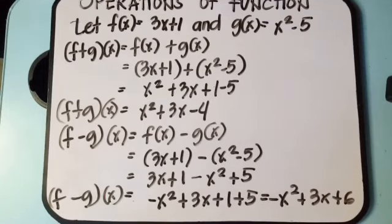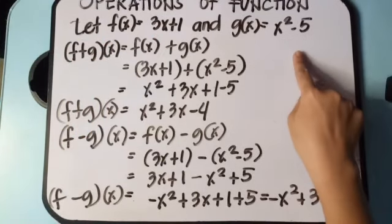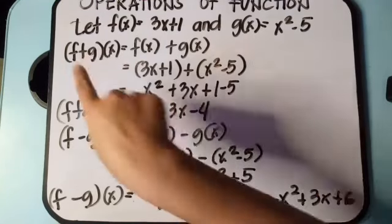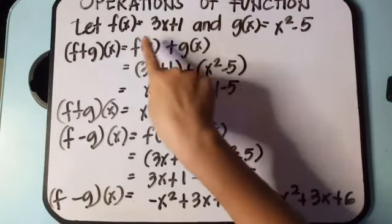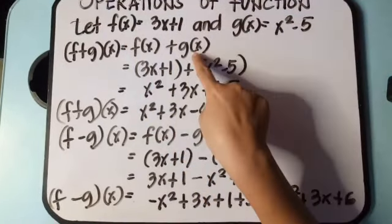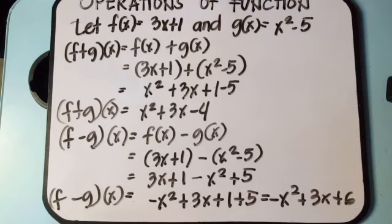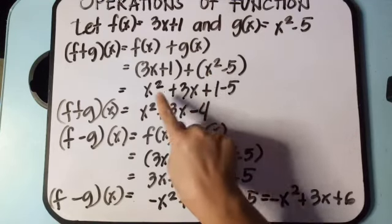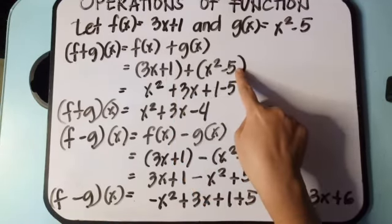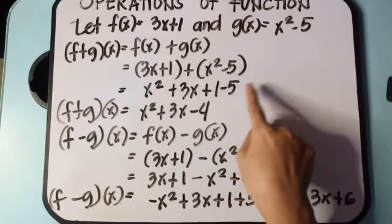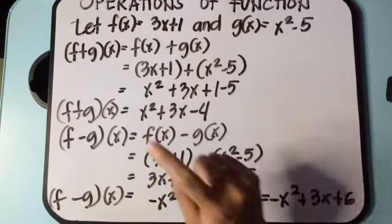Let's have an example. Given the two functions f of x is equal to 3x plus 1 and g of x is equal to x squared minus 5. When we add the two given functions, that is f plus g of x equals f of x plus g of x. So we copy 3x plus 1, then add x squared minus 5. We arrange terms from highest exponent to lowest: x squared plus 3x, then 1 minus 5 gives us negative 4. So the answer for the addition of the two functions is x squared plus 3x minus 4.